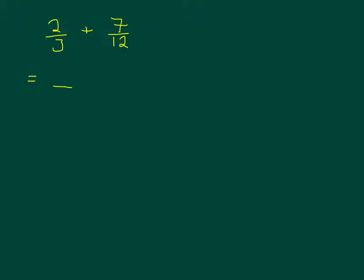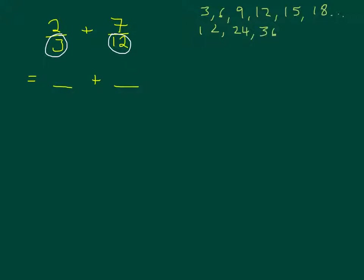I need to think of a number which is in the three times table and the twelve times table. The lower number you pick the better, because you've got less simplifying to do at the end. What you're really looking for is the lowest common multiple of 3 and 12. Going through the three times table: 3, 6, 9, 12 — and the twelve times table — the smallest number that appears in both lists is 12. So 12 is the lowest common multiple. I'm going to change this to something over 12 plus something over 12.